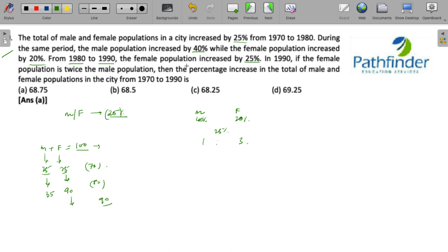From 1980 to 1990, the female population increased by 25%, so 22.5 I have to add. The population becomes 112.5. Then you are told that this is twice the male population, so obviously male population should be half of this figure, which must be 56.25.